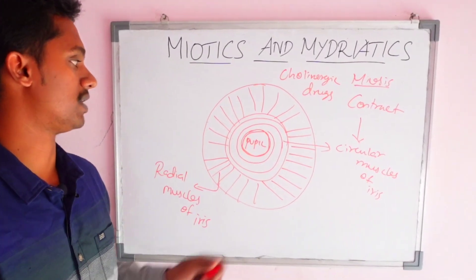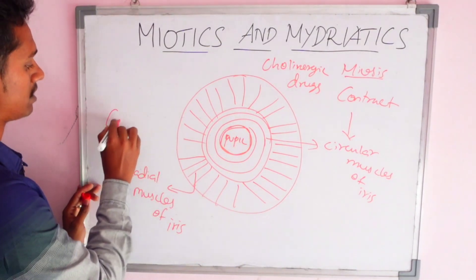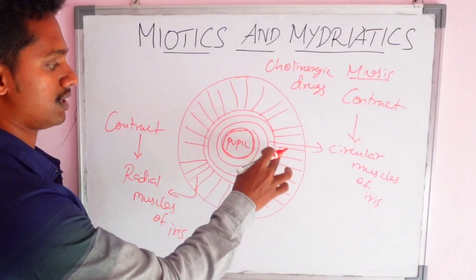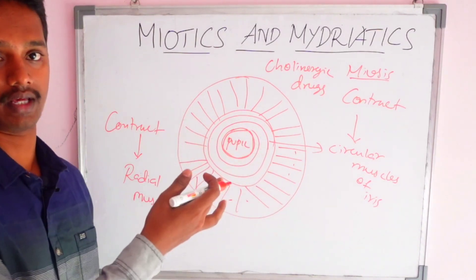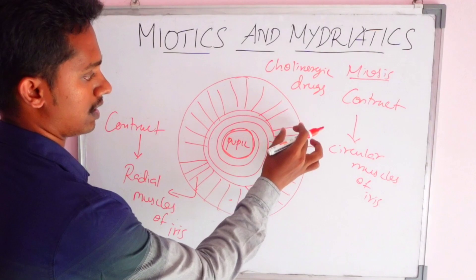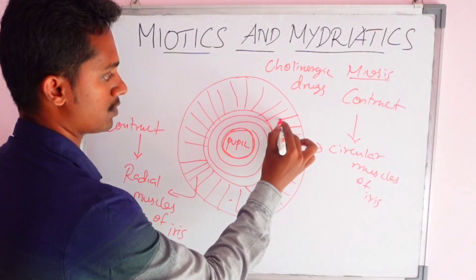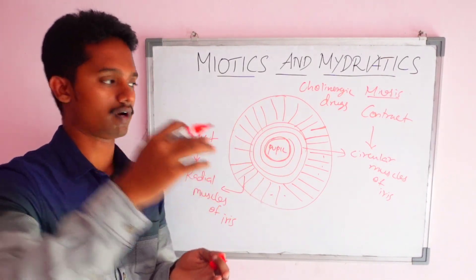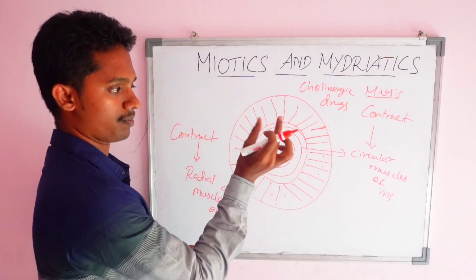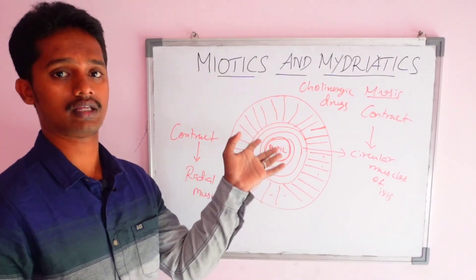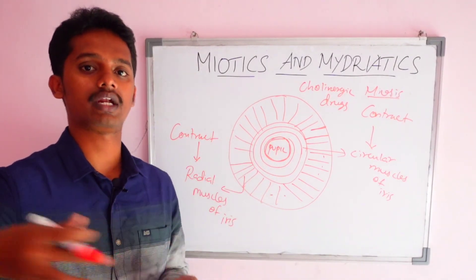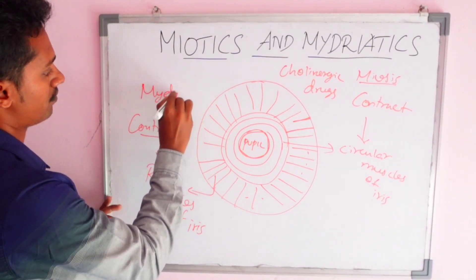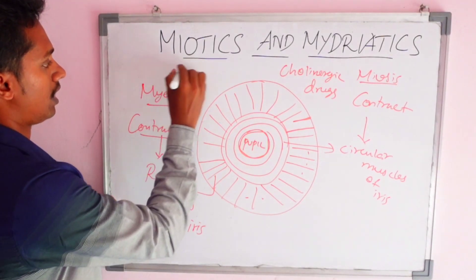Next, mydriasis is produced when the radial muscle contracts and mydriasis is produced. When you contract the radial muscles, the space increases, so the pupil diameter increases and the pupil is dilated. That is why when the radial muscles contract, mydriasis is produced. The drugs that produce this are adrenergic drugs.